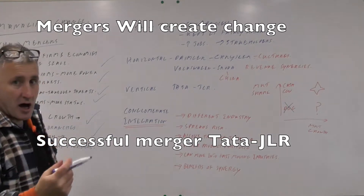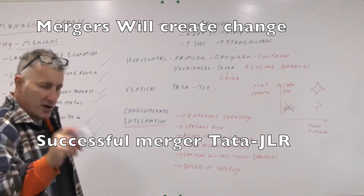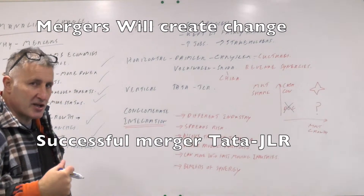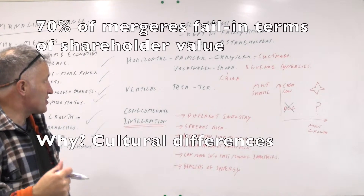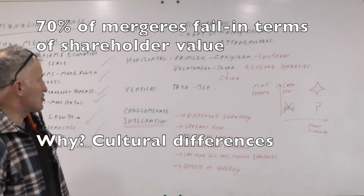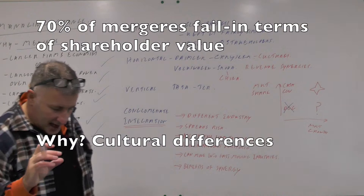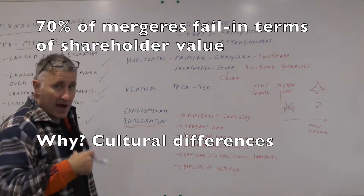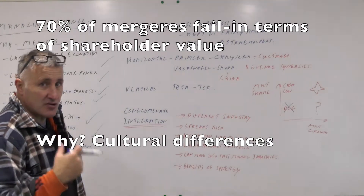Tata and JLR: when Tata took over JLR, that was a bargain of the century — a really good move by Tata. But in terms of the cultural change, they left JLR largely as it was. So therefore it was a very successful process of managing change. It was a slow process that kept Jaguar Land Rover fairly similar in terms of its structure. And they've also invested very heavily in JLR.